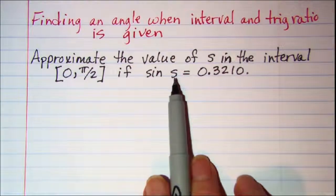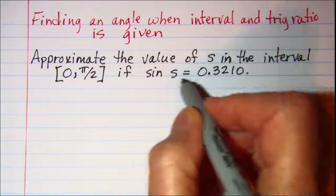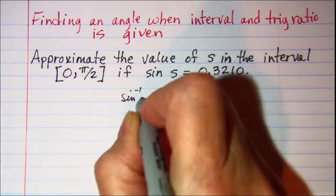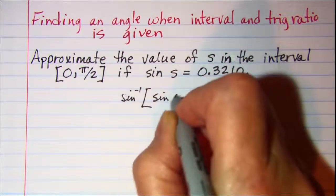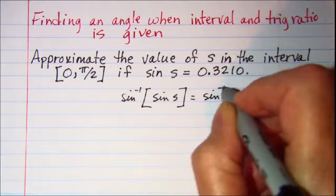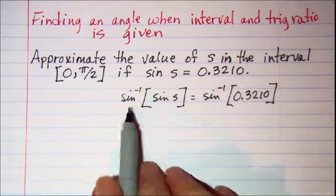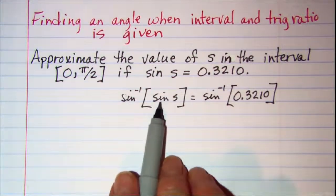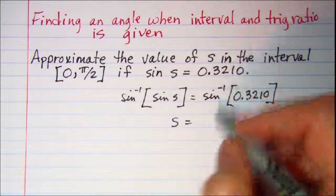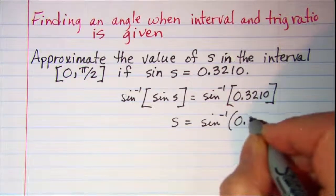So we're looking for the angle given the sine ratio. We can take this equation and arcsine both sides. Inverse sine of the sine of s, and then on this side inverse sine of 0.3210. Whenever you do the inverse sine of the sine, we get just s on the left side. And 0.3210 is what we'll be putting in our calculator.